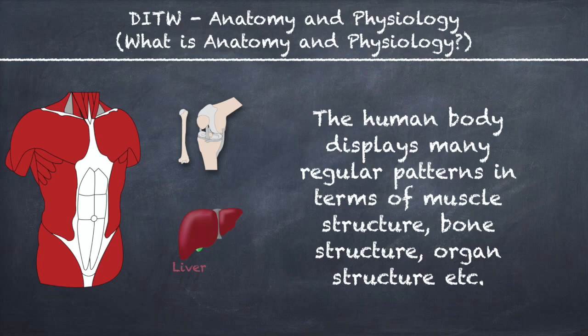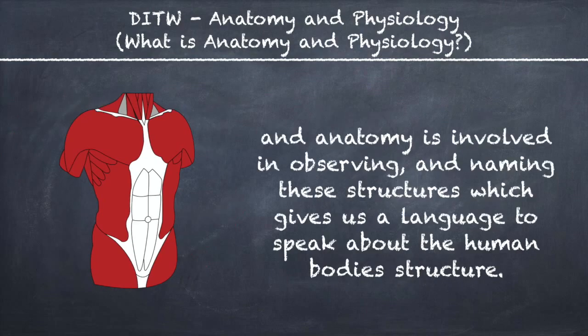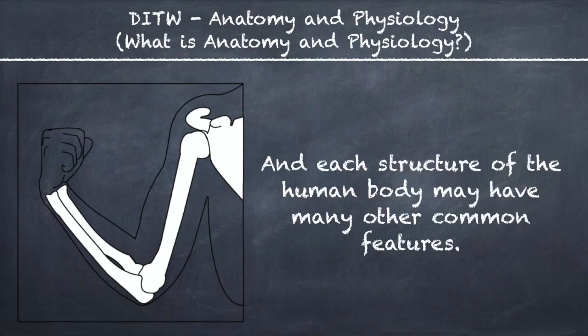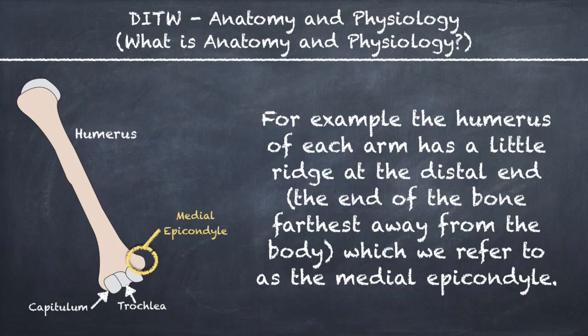The human body displays many regular patterns in terms of muscle structure, bone structure, organ structure, and so on. Anatomy is involved in observing and naming these structures, which gives us a language to speak about the human body's structure. For example, the humerus of each arm has a little ridge at the distal end, which we refer to as the medial epicondyle.